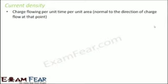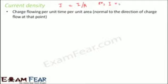What is current density? It is charge flowing per unit time per unit area, normal to the direction of charge flow at that point. Current density is denoted by capital J and is a vector quantity — important to note that current is a scalar quantity, but current density is a vector quantity. Current density J relates to current by I equals J dot A, the dot product of the current density vector and the area vector.